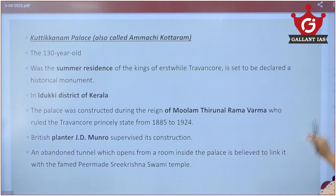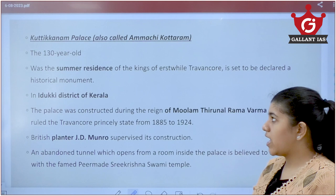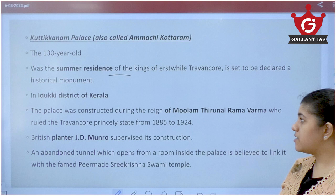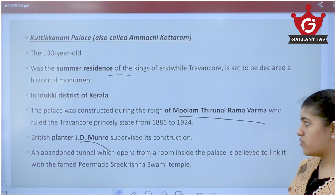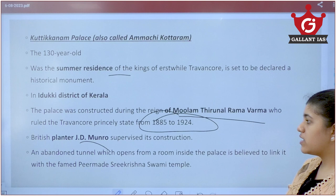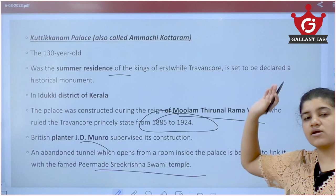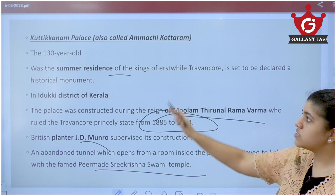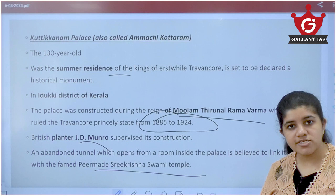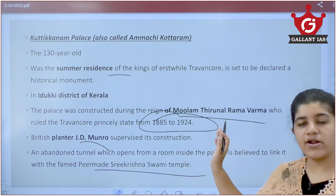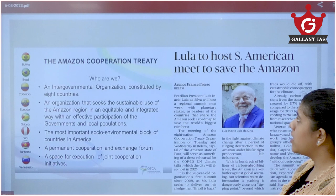A 130-year-old palace in Kerala is to be declared a monument. Known as Kuttikonam Palace or Ammachi Kottaram, it is located in the Idukki district of Kerala. It was the summer residence of the Travancore kings, created by Moolam Thirunal Rama Varma with the help of British planner J.D. Munro, built between 1885 and 1924. The palace has an abandoned tunnel leading to the Peermade Shri Krishna Swami temple. ASI has proposed declaring it a monument.